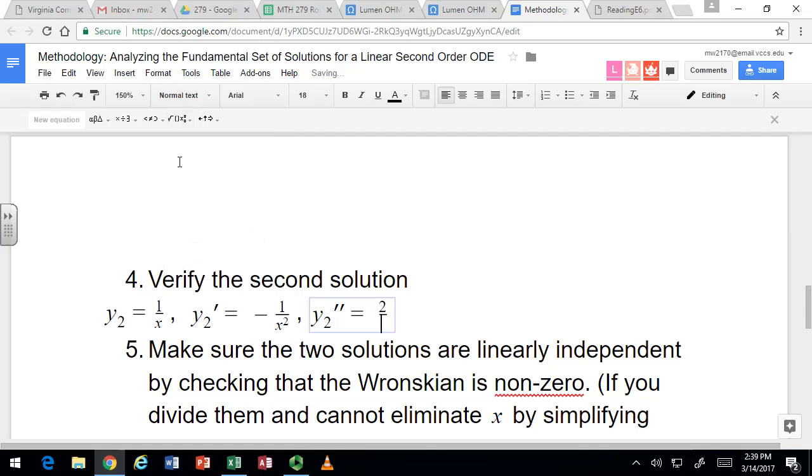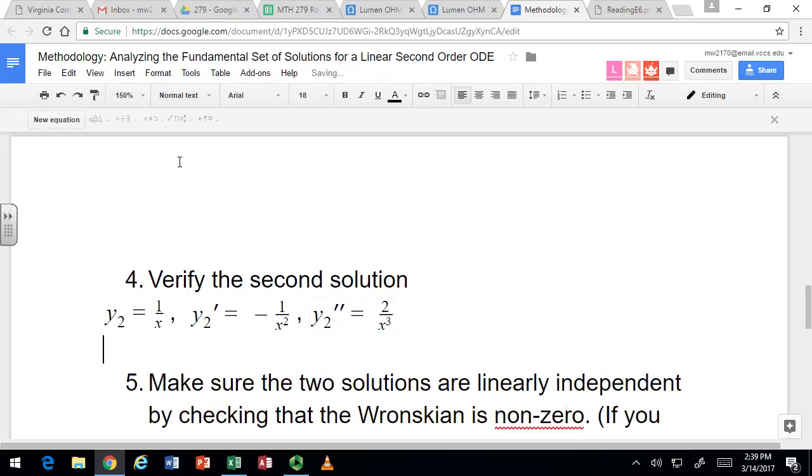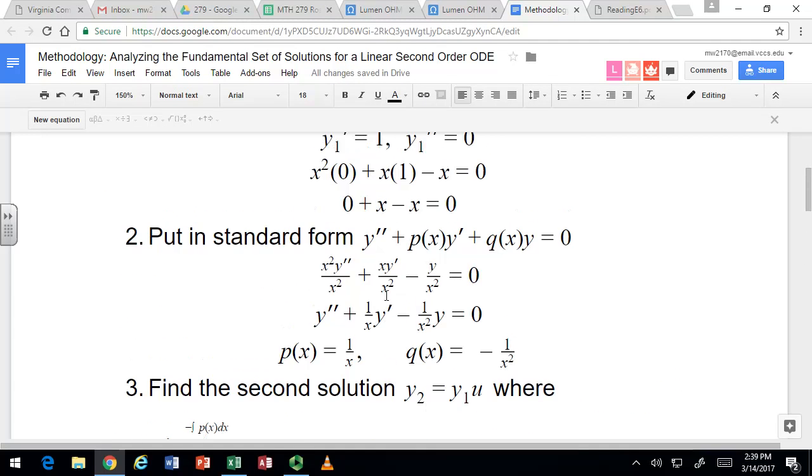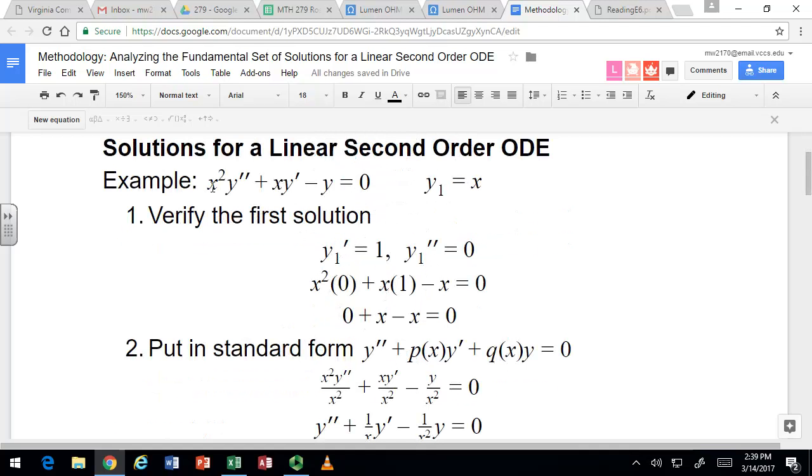We're going to have a negative out front, and then that -2 multiplies with the negative out front to make it positive 2/x³. So there's the proposed second solution and its two derivatives. I'm just going to put those in the differential equation and make sure it checks out.